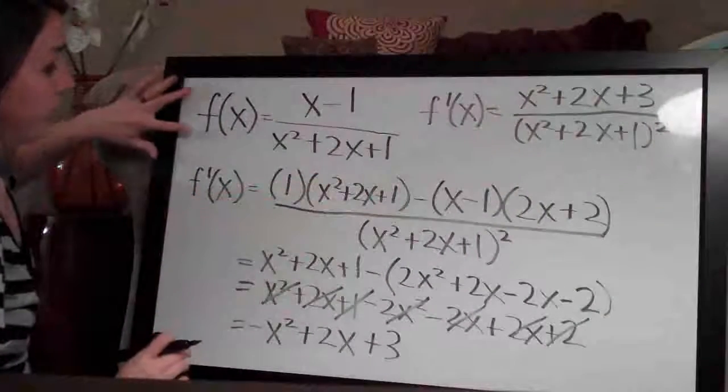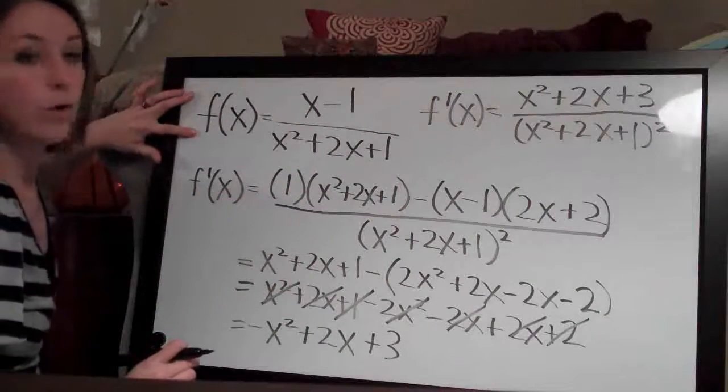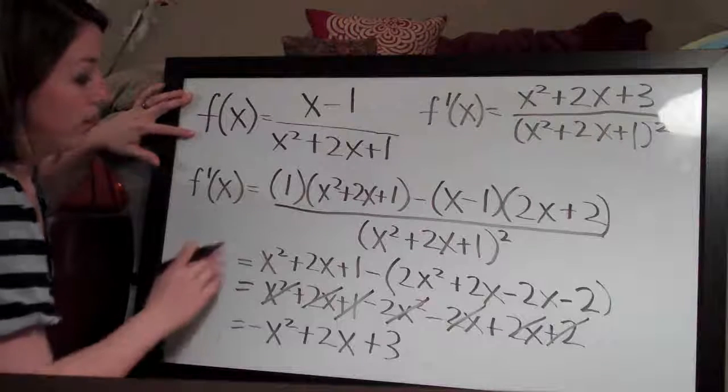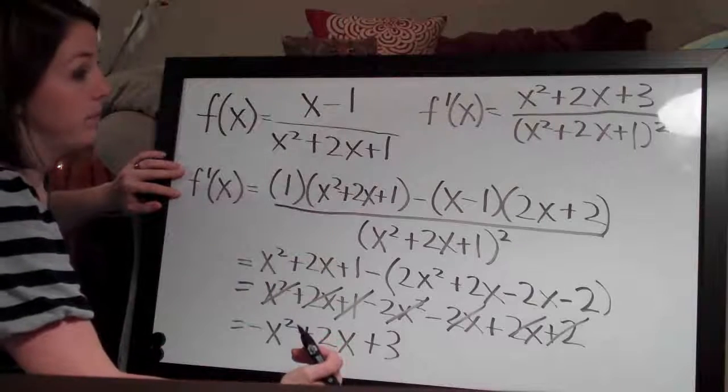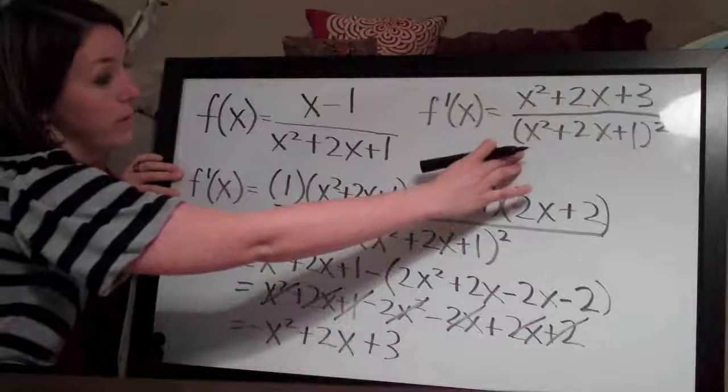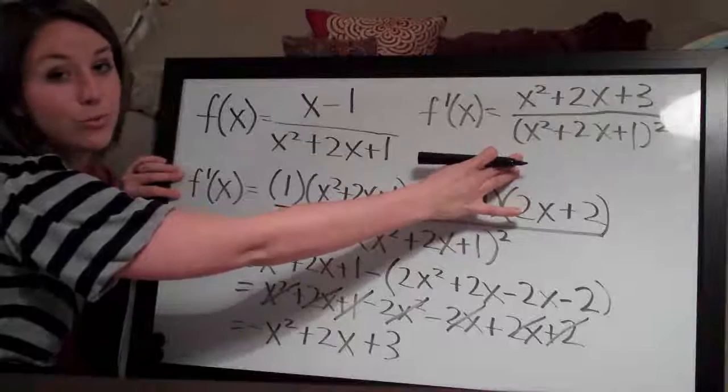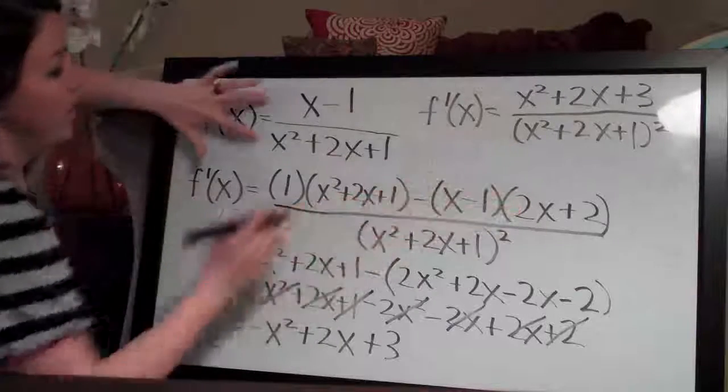So we took the function, applied quotient rule to find the derivative, then went through simplification steps and eventually wound up with this answer. That's how you use the quotient rule to take the derivative of a function like this.